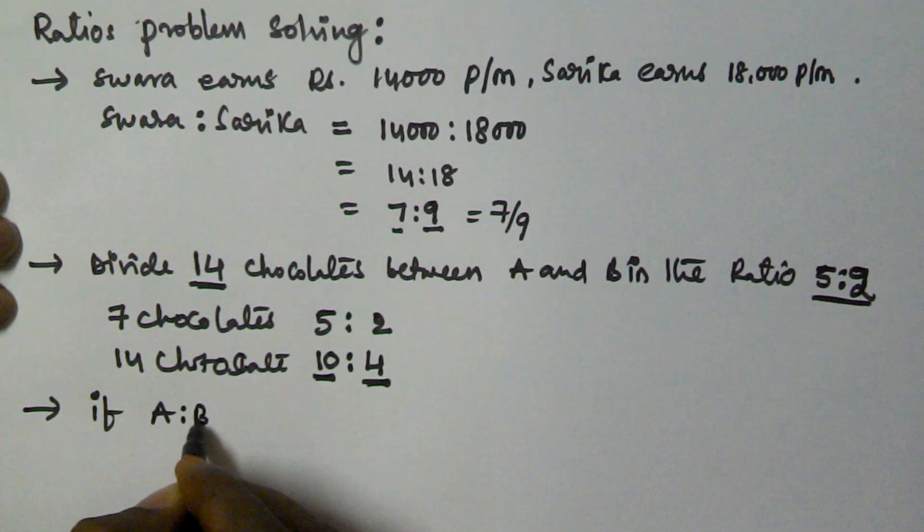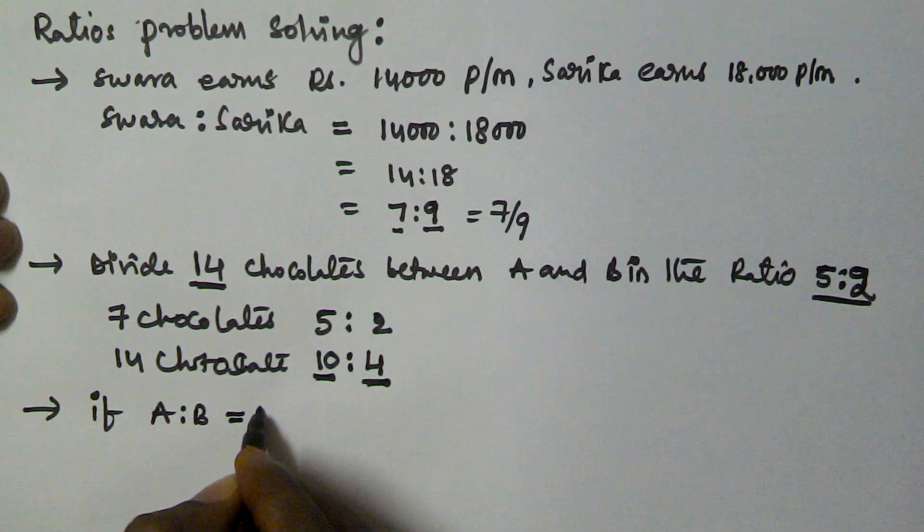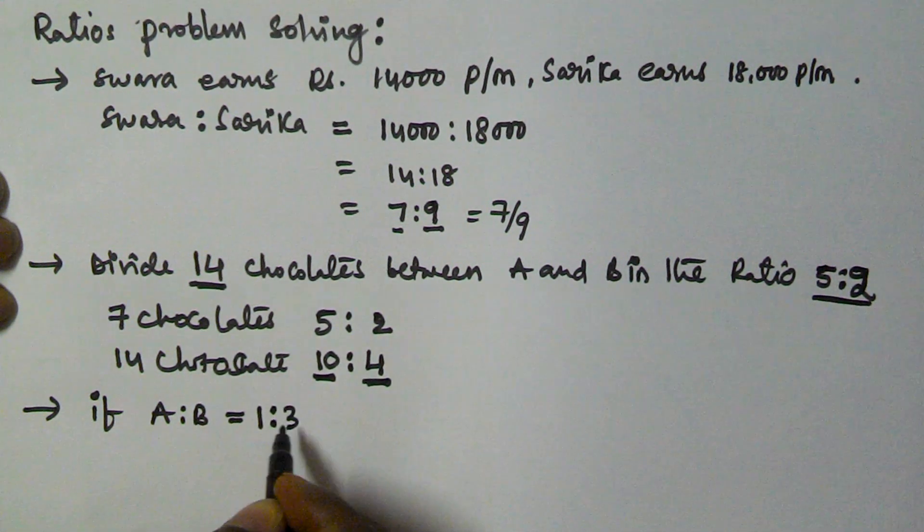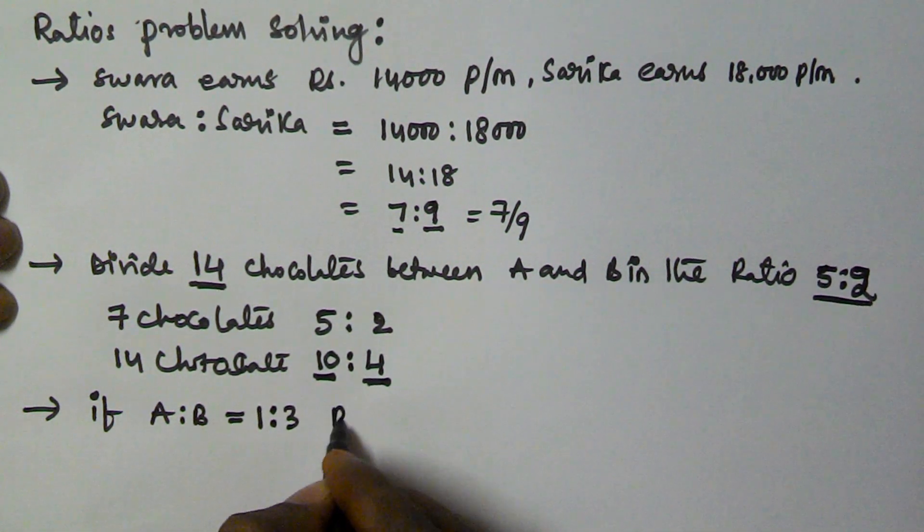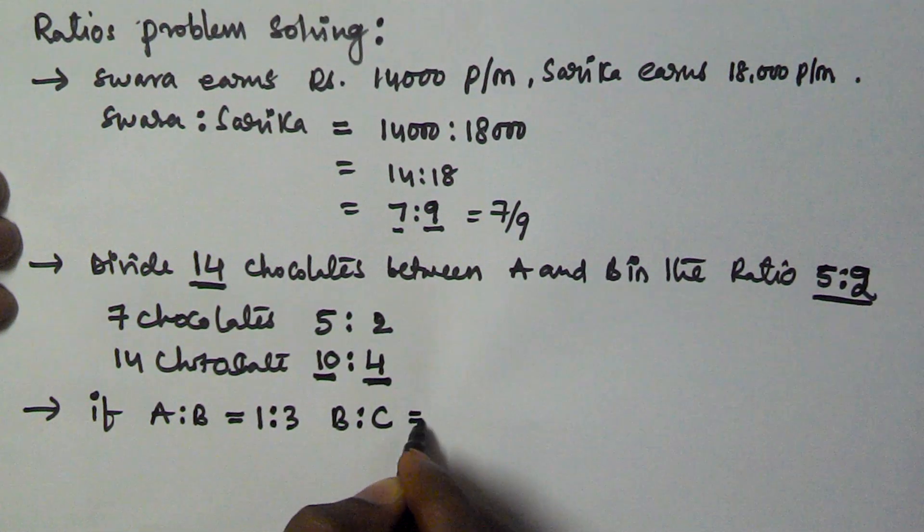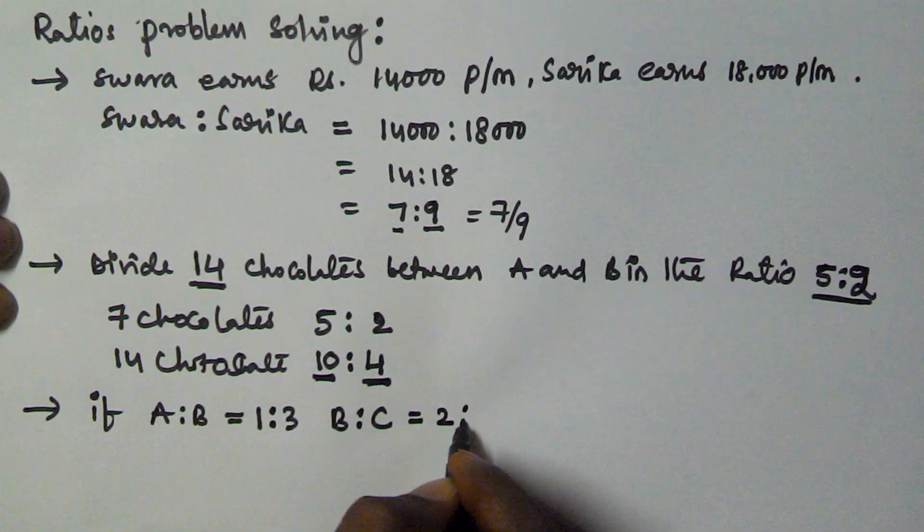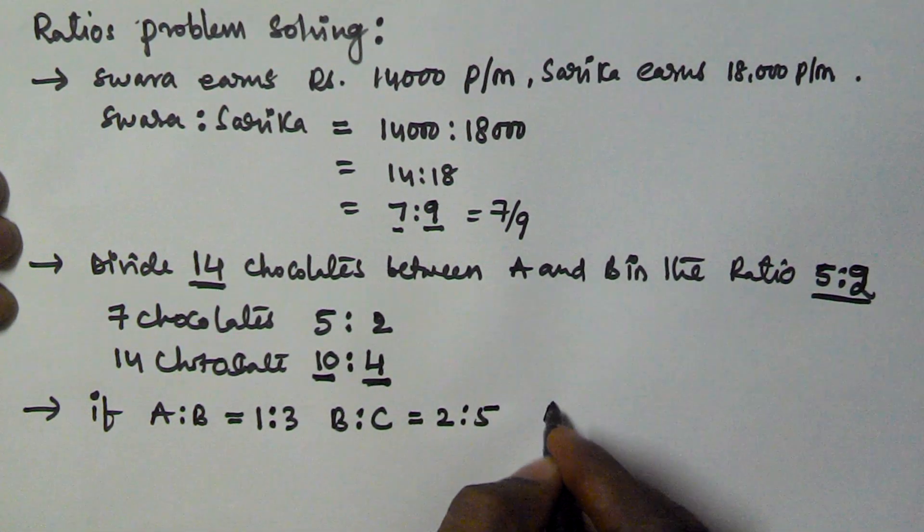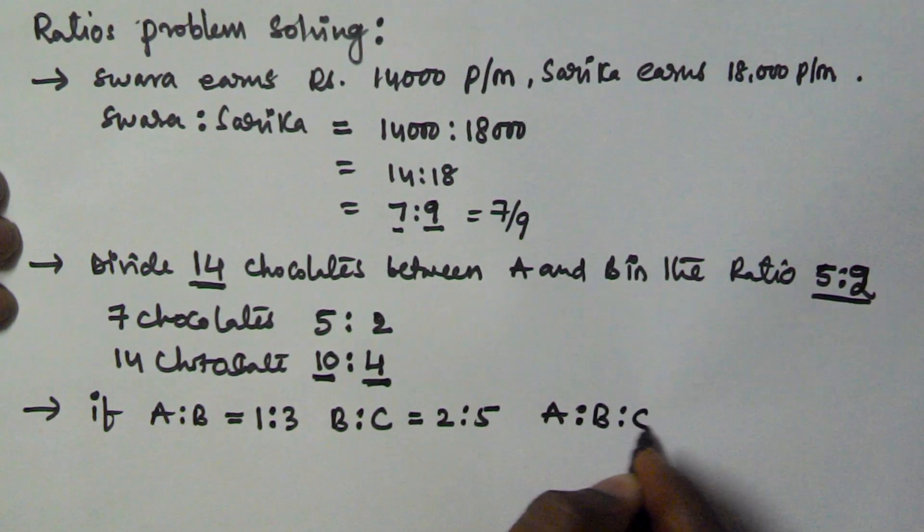Let us see another example. If A ratio B is equal to 1 ratio 3 and B ratio C is equal to 2 ratio 5, then we have to find A ratio B ratio C.